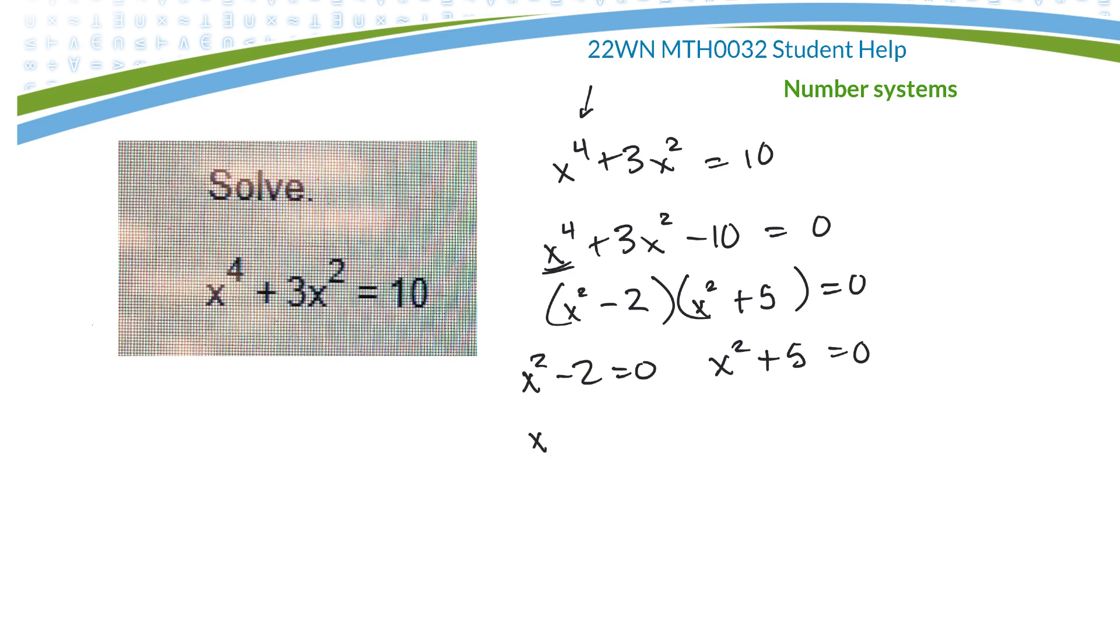On the left one, I'll move the 2 over to the right and make it positive. I'll move the 5 over and make it negative. Then I'll use the square root principle on both of those. So x could be equal to a plus or minus root 2, or x is equal to a plus or minus square root of negative 5.